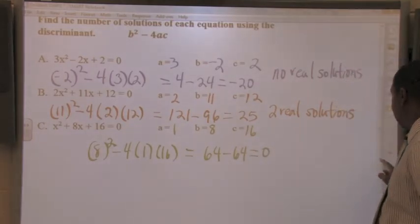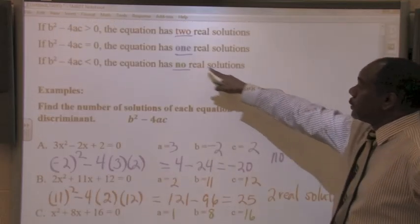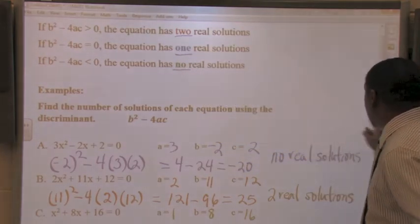64 minus 64 is 0. And if it's 0, notice that there is one real solution.